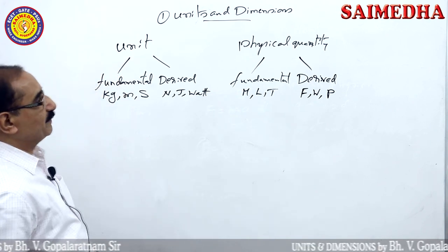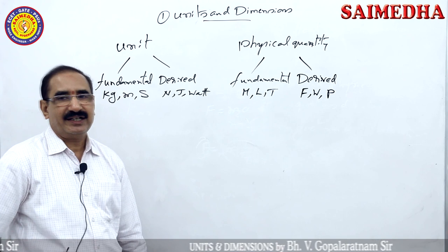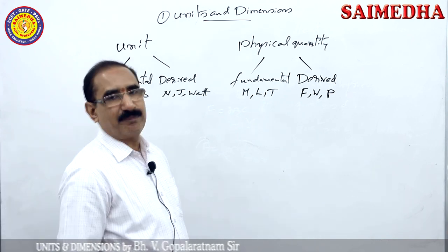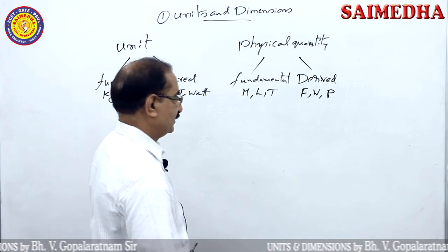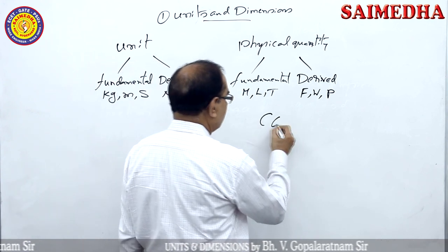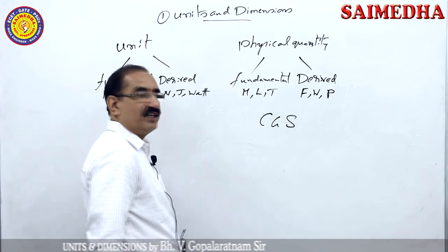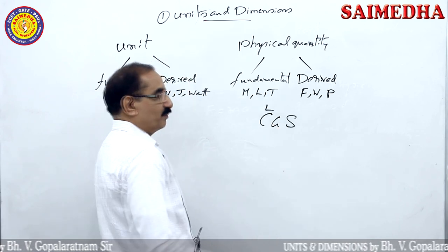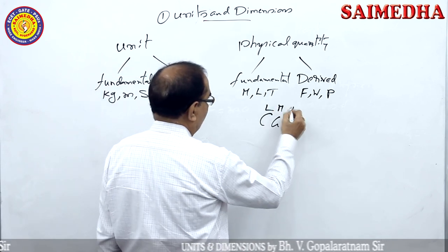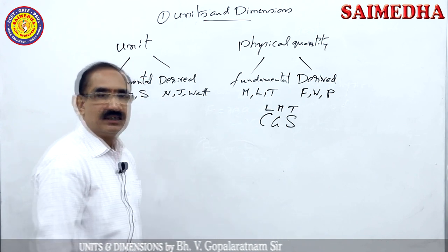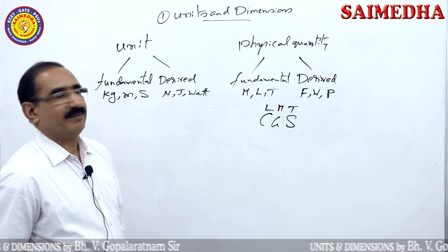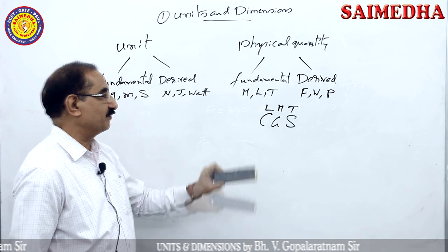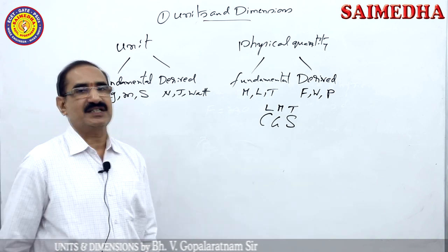We have two types of physical quantities: fundamental and derived. These physical quantities can be measured in three systems. The first is the CGS system — centimetre for length, gram for mass, and second for time. So the first system is CGS.